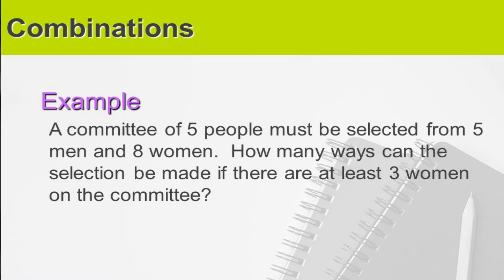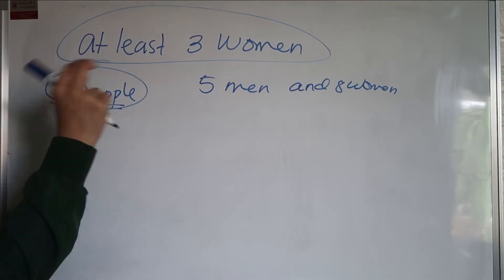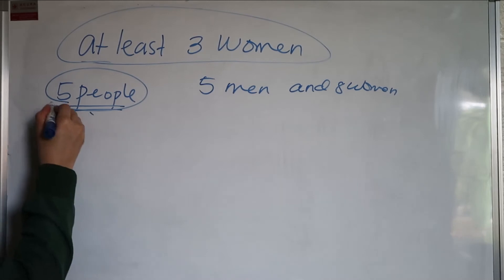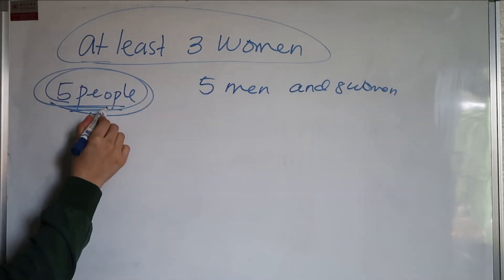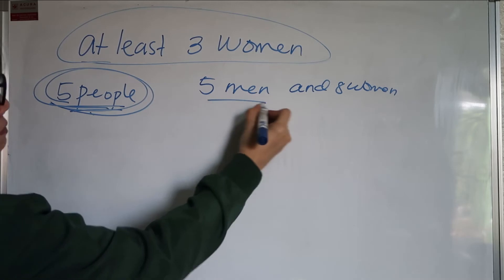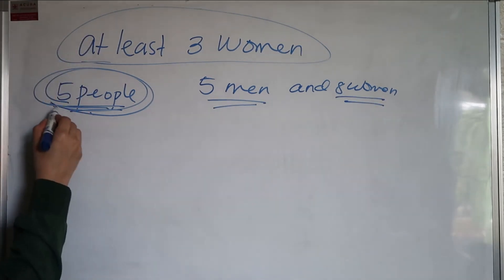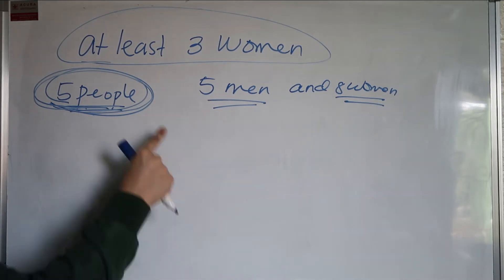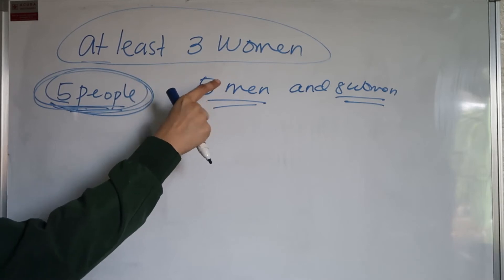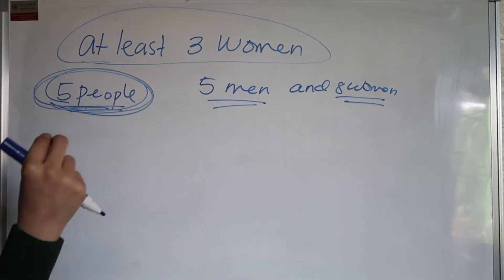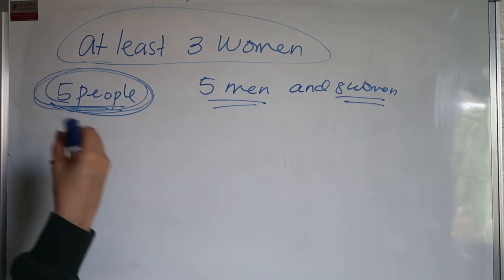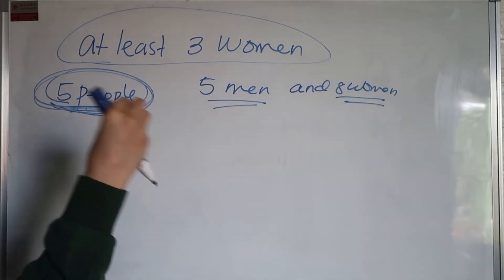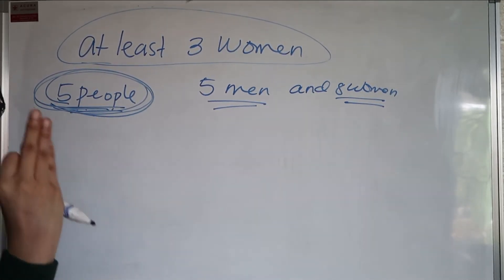To answer that, we need to select at least three women. The question says a committee of five people, so we need to select five people total. There are five men and eight women. We don't know how many men and how many women to select, but according to the problem, at least three women. When we say at least three women, the minimum number of women is three, or four, or five.